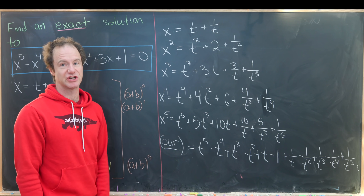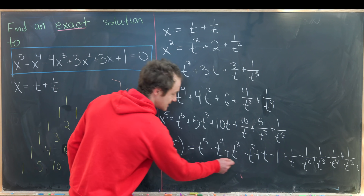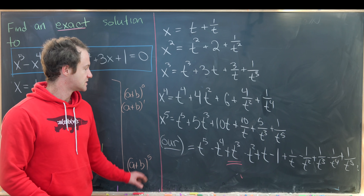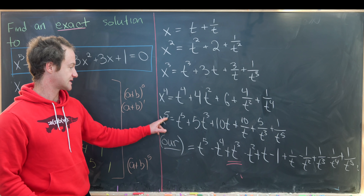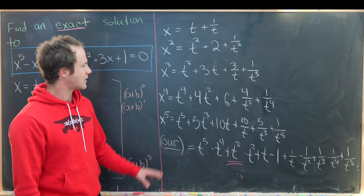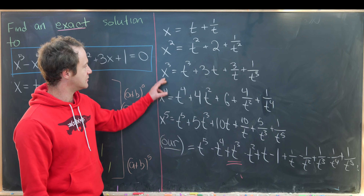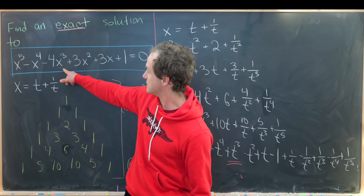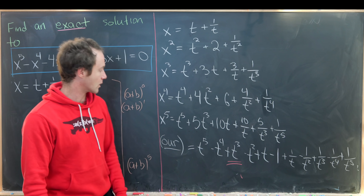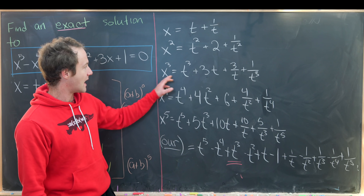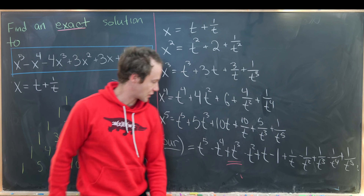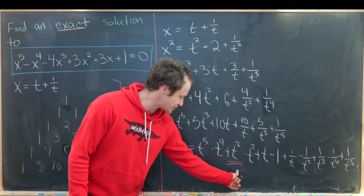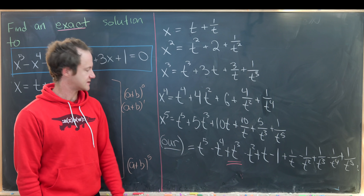As a spot check, let's verify the coefficient of t cubed. We get 5t cubed from the x to the fifth term, and the only other t cubed appears in the x cubed term, which is attached to a coefficient of minus 4. So we have 5 minus 4, giving us plus 1 times t cubed — which matches what we have. The spot check confirms the result.